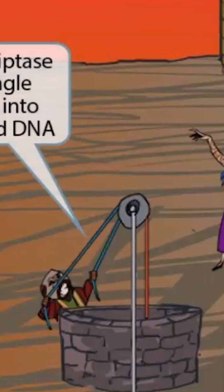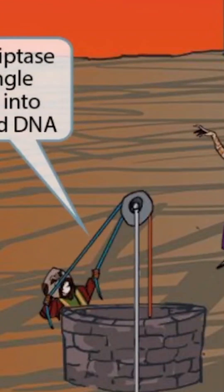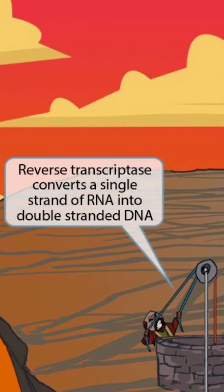If you look closely at the ropes in the well, you can see that there is one red rope emerging from the well, and then after the pulley, it splits into two blue ropes. The single red rope represents RNA, and the two blue ropes represent DNA. This should help you remember that the enzyme reverse transcriptase converts a single strand of viral RNA into double-stranded DNA.